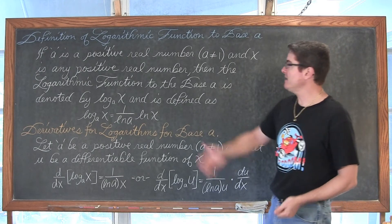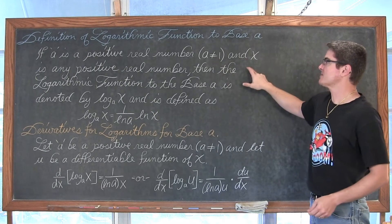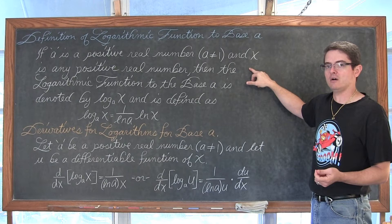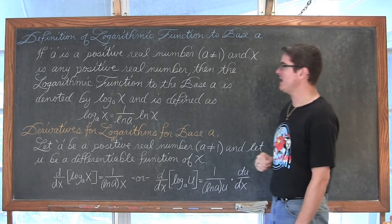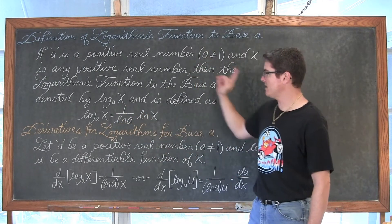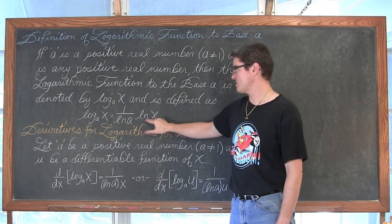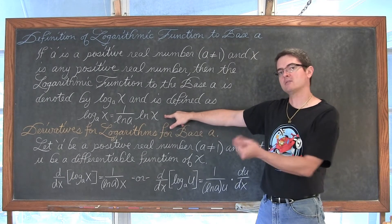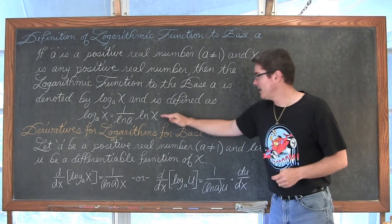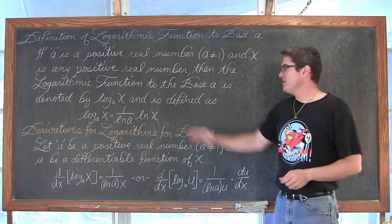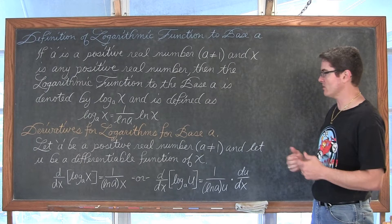Definition of a logarithmic function to base a: if a is a positive real number, not equal to one, and x is any positive real value — because we can't take the log of a value unless it is positive — then the logarithmic function to base a is denoted by log base a of x, and is defined as log base a of x equals one over the natural log of a times the natural log of x. This definition is showing you that you can use the derivative rule already learned in your previous lesson.